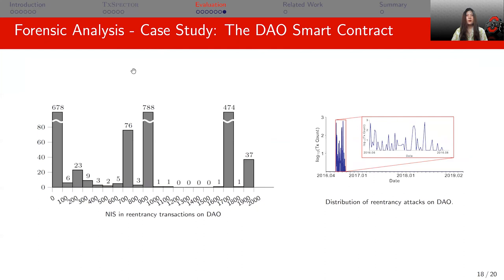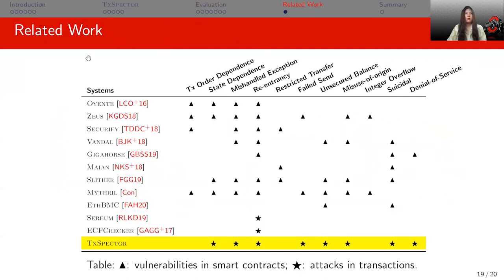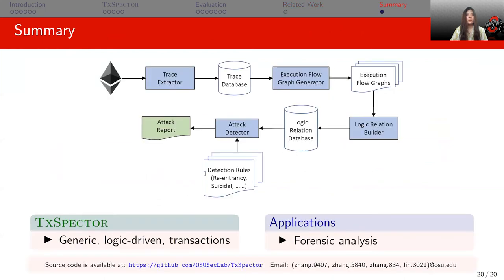We also have other experiments — please refer to our paper. The related work includes analysis of smart contracts, transactions, and formal verification. We have highlighted the differences between TS-Bacter and other related tools; please refer to our paper for details. To summarize, I have presented TS-Bacter, the first generic and logic-driven framework for identifying real-world attacks on Ethereum transactions. We evaluated our system with a large number of transactions across several attack types, performed forensic analysis, and obtained interesting results. The source code is available at the link provided. Please feel free to contact us by email. Thanks for listening.